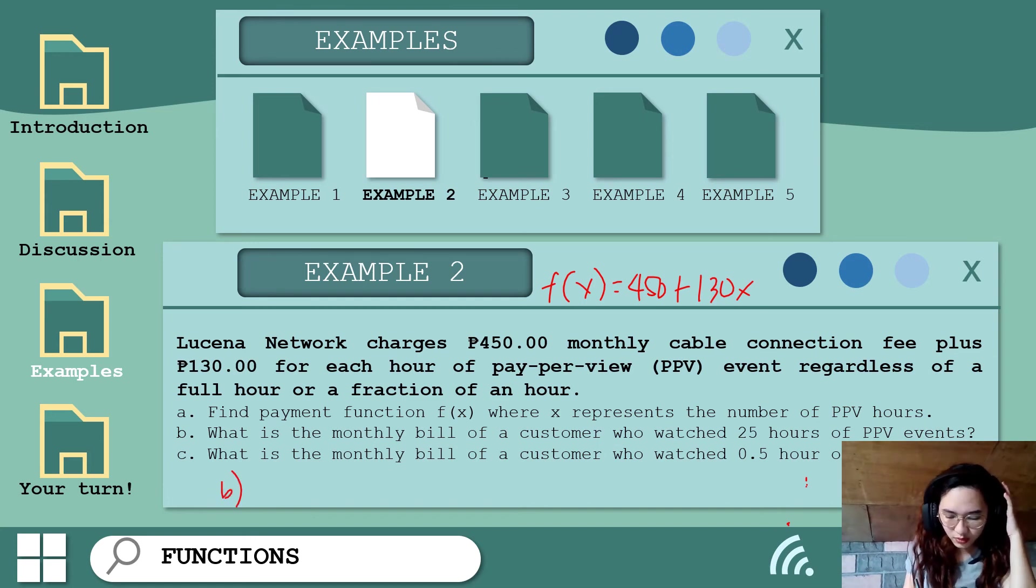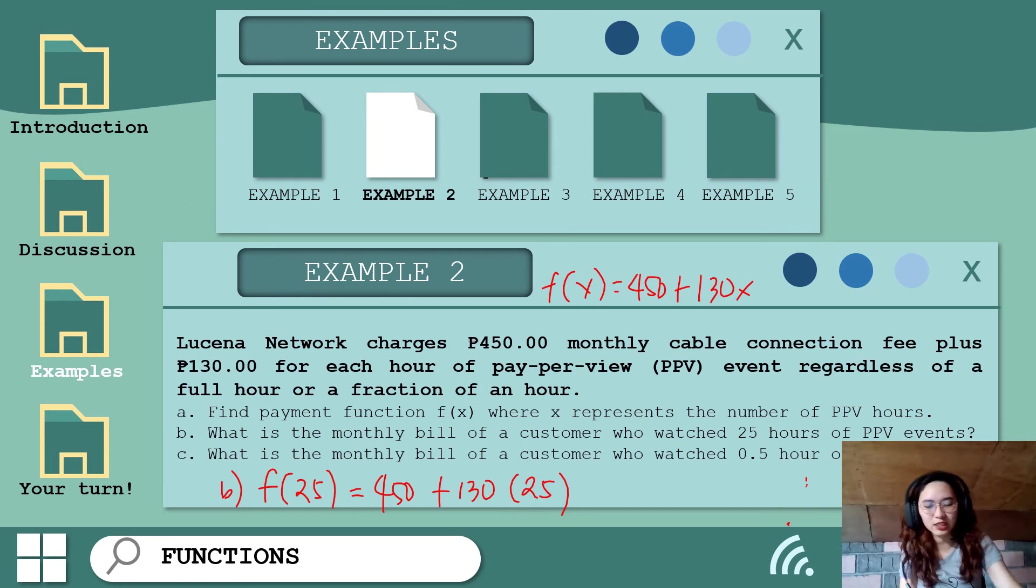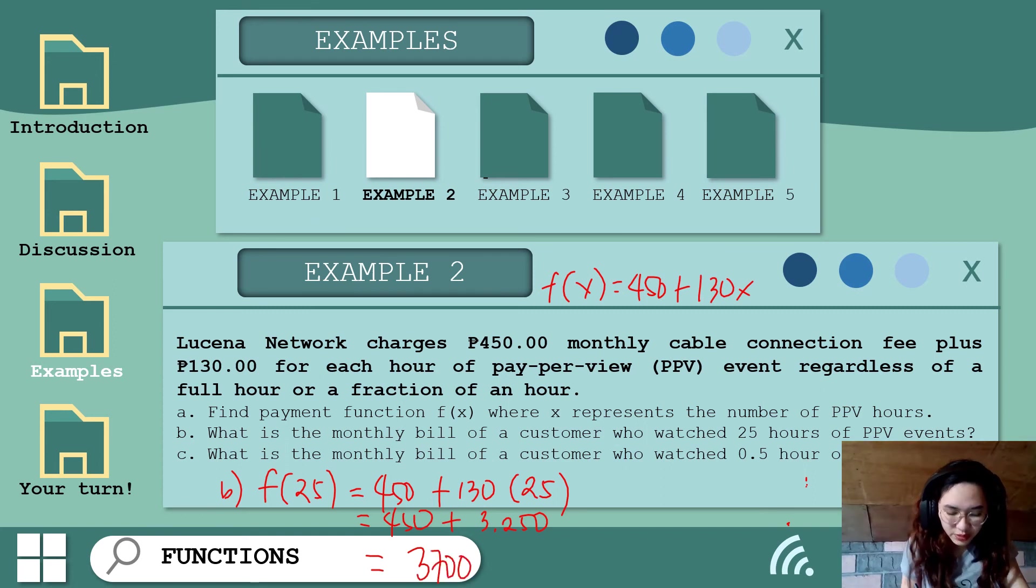What will be the monthly bill of a customer who watched 25 hours? F(25) = 450 + 130(25). For 25 hours, 25 times 130 equals 3,250, the additional to the bill. So the total he will pay is 450 + 3,250 = 3,700 pesos total bill.